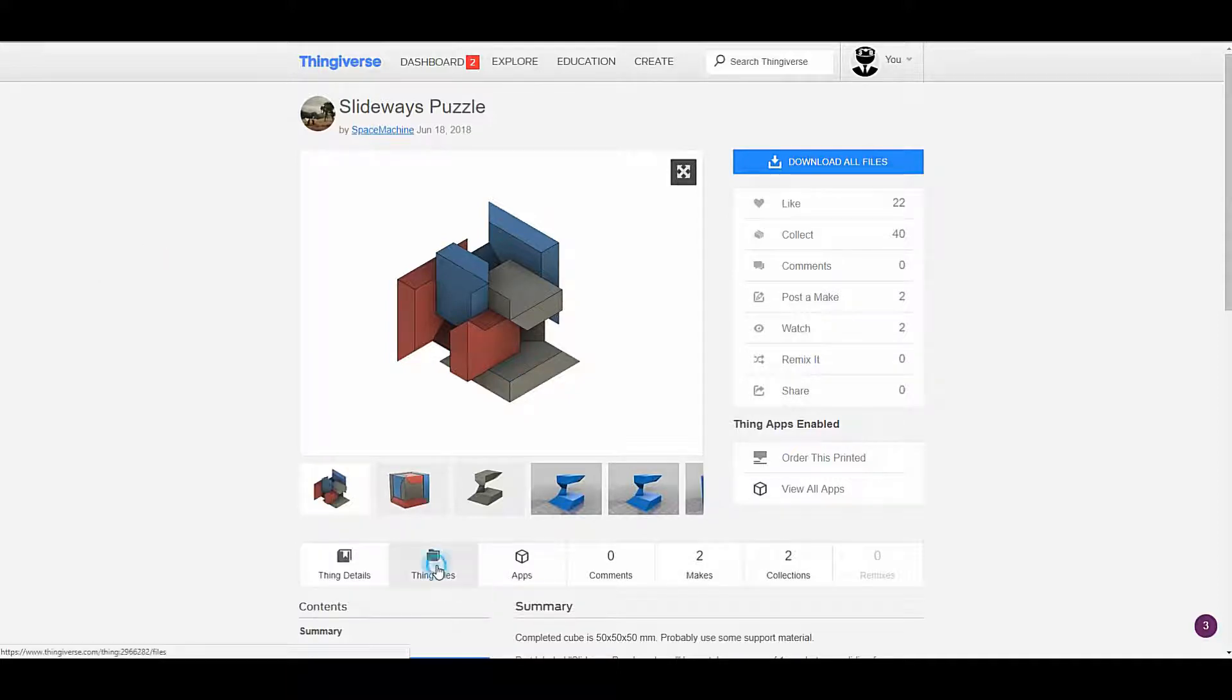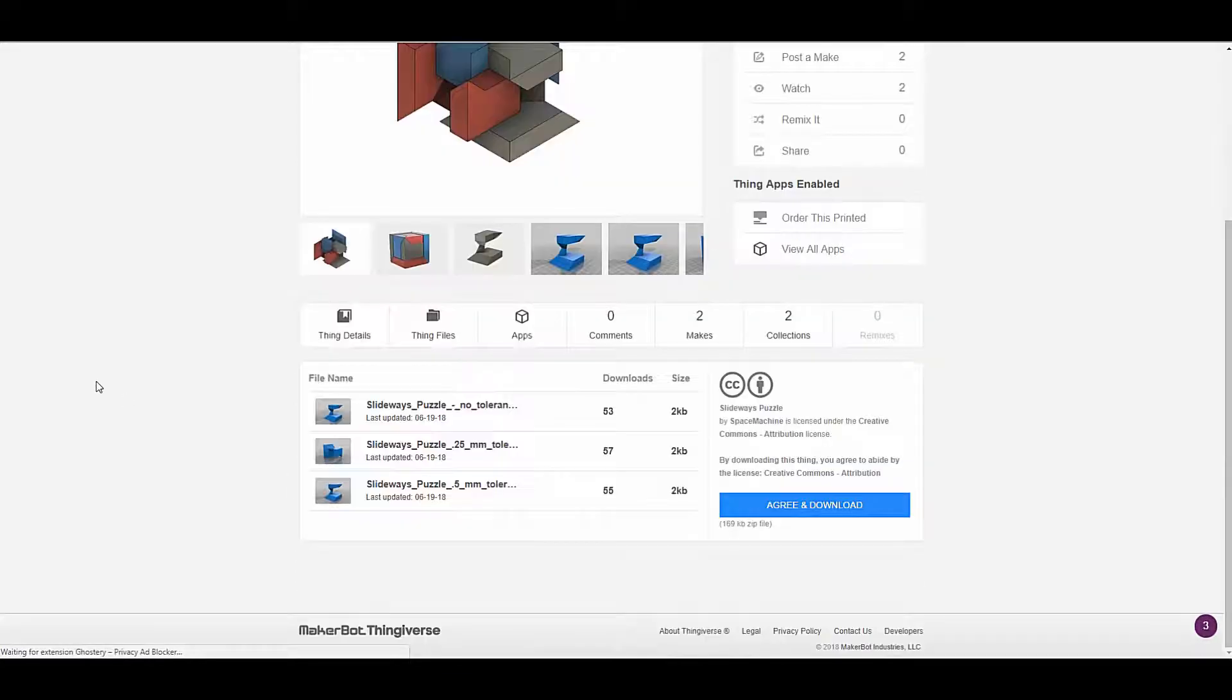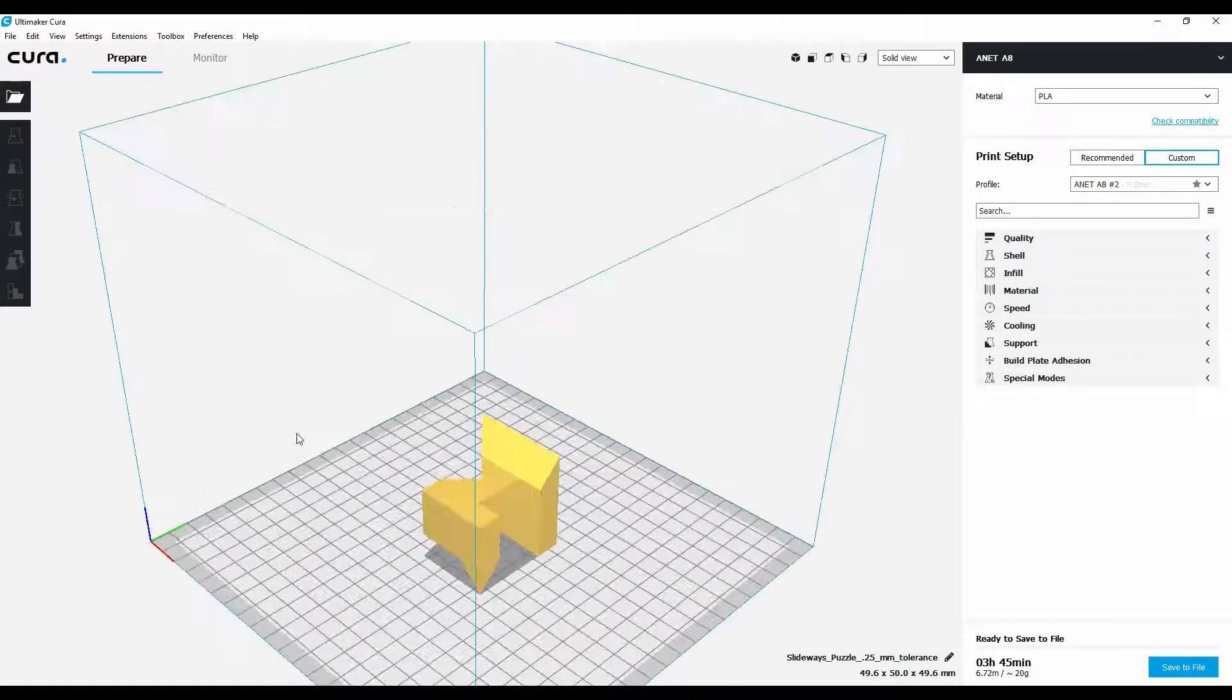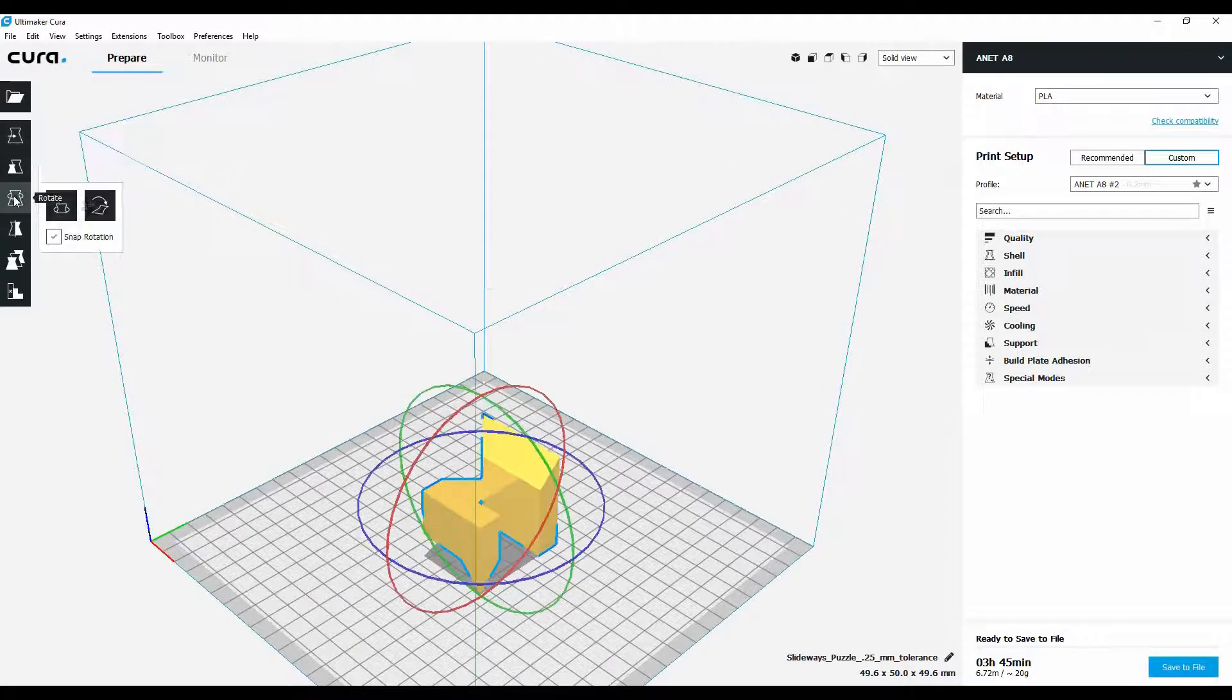I decided to print the part with a 0.25mm tolerance. I used Cura 3.4 to slice the part, but before I sliced it I turned the piece to an angle that did not need supports.